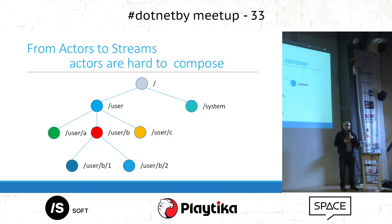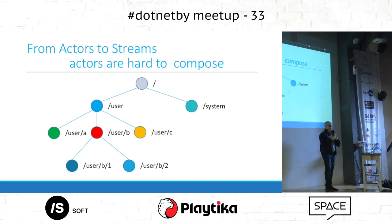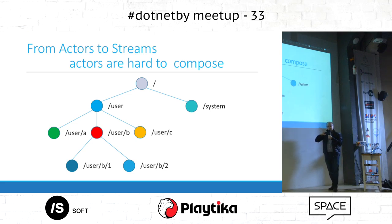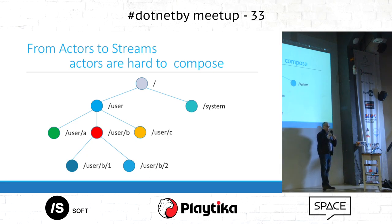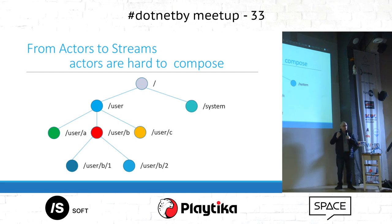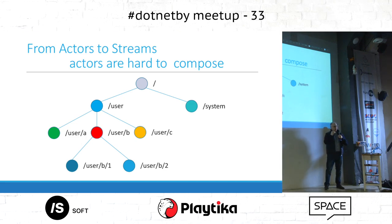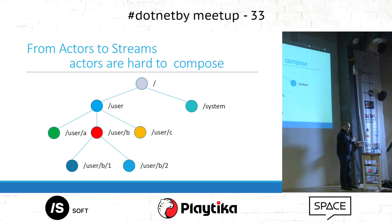When you send a message to an actor, there's no real way to compose the pipeline — especially from a functional programming paradigm, where to compose two functions the output of one must match the input of the next. With actors, the 'tell' method returns nothing. So compositionality has to be part of the message itself: you send a message and part of the payload tells where the continuation is — the next stage or destination. It's not easy; it starts to get complex.